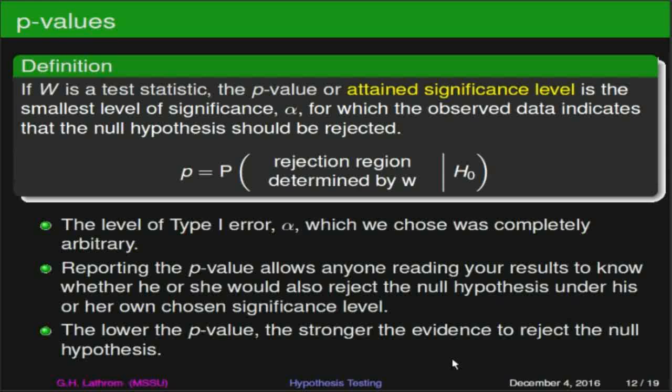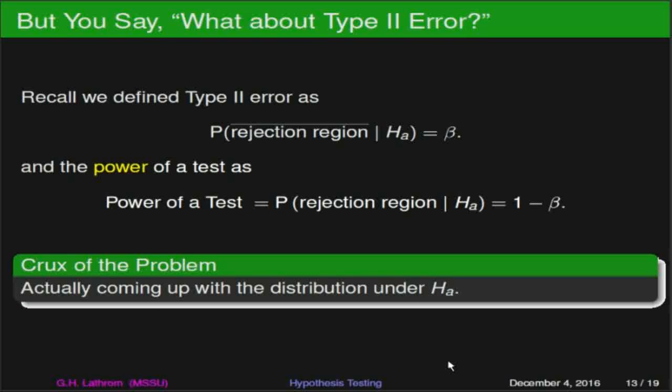Basically, the general rule of thumb is: the lower the p-value, the stronger the evidence to reject the null hypothesis. So as we're running through things, we'll really want small p-values.